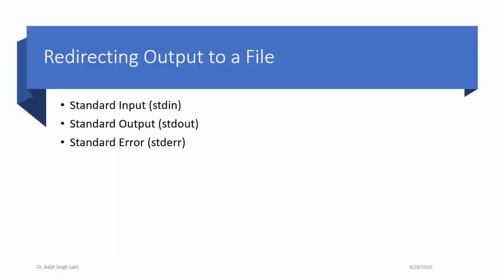The first thing is how to redirect the output to a file. Three things to remember here are standard input stream, standard output, and standard error. These are the three channels reserved for getting input from the standard input device, redirecting output towards the standard output device, and redirecting errors towards the standard error device.